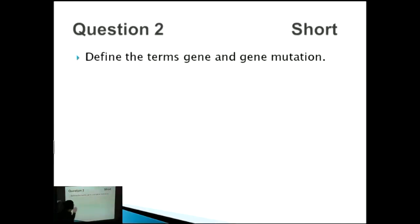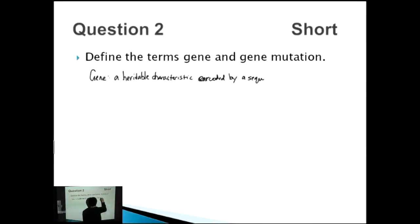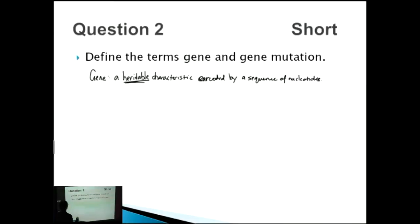Second question: define the terms gene and gene mutation. This is relatively short, so we're only looking for four points. A gene is a heritable characteristic — the fact that it's heritable and inherited is very important. So if you have a mum and dad, they'll pass on genes to the kids, and this characteristic, whether it be hair, eyes, or height, will influence the children as well.